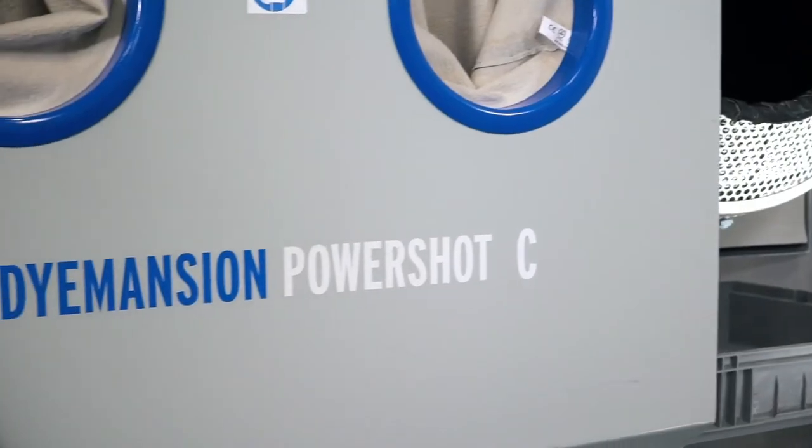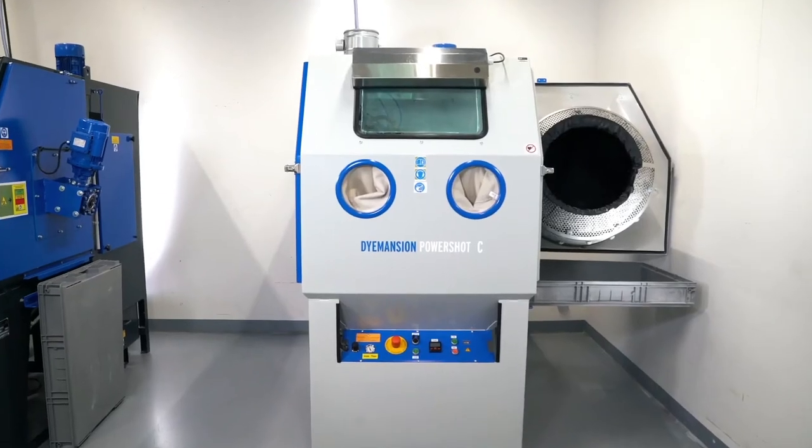To clean 3D printed parts in an efficient way, we developed the Dimension PowerShot C system. When I speak about efficient, I speak about an automated process because this reduces your manpower, costs, and lead time, and I also speak about damage prevention. Because if you think of damaging a part by a manual process, the result is always to rebuild a part.